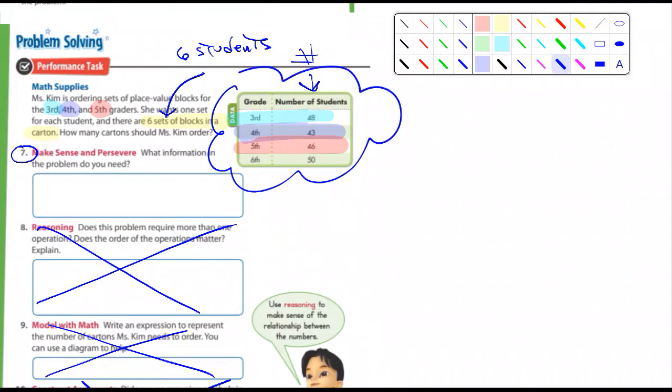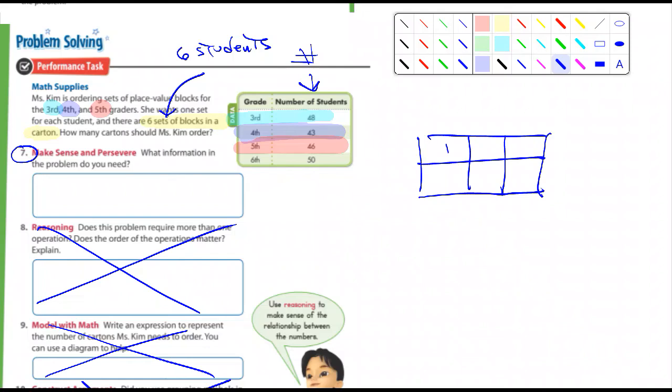And let's say just for example, each one of these cartons has six blocks. Let's say this is a carton. And here's one set of blocks, two, three, four, five, six. Let me ask you, if there was twenty students and each one needed a set of blocks, how many cartons, this is a carton, how many cartons would she need to order?